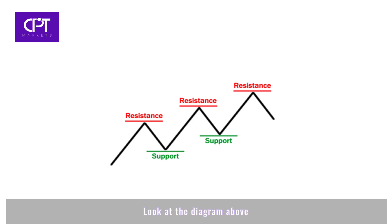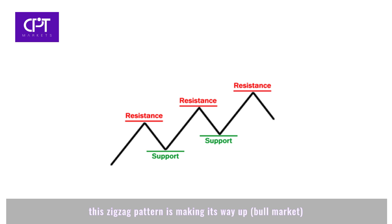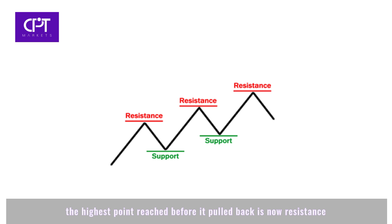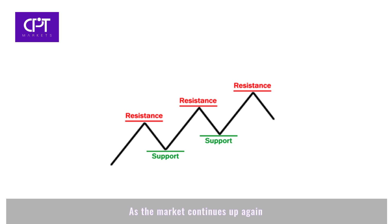Look at the diagram above. As you can see, the zigzag pattern is making its way up — a bull market. When the Forex market moves up and then pulls back, the highest point reached before it pulled back is now resistance. As the market continues up again, the lowest point reached before it started back is now support.